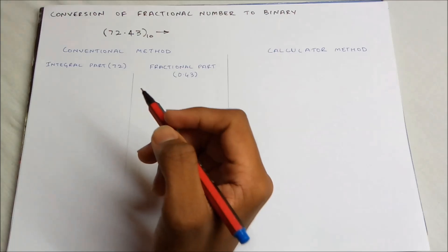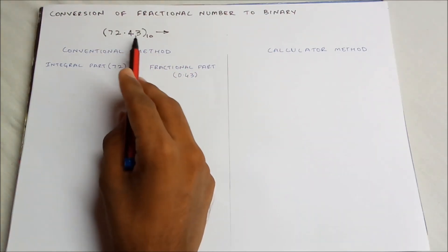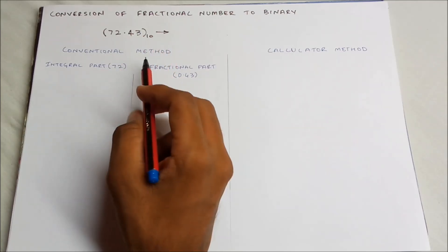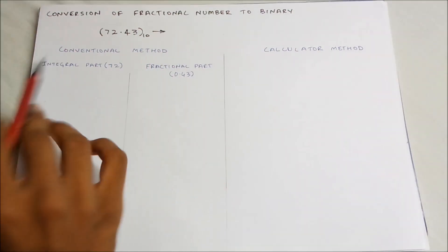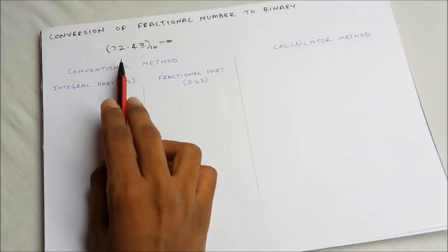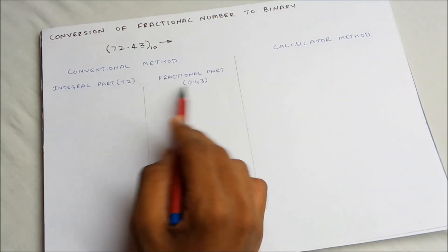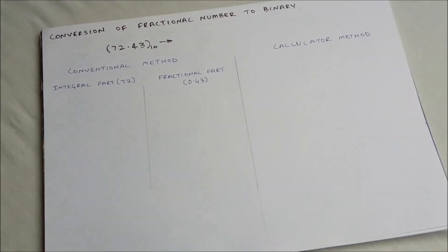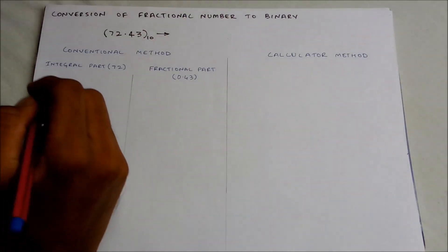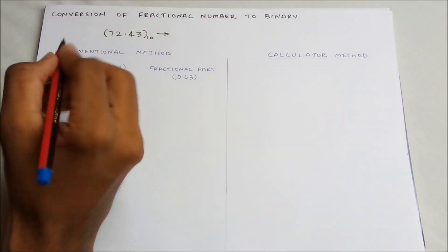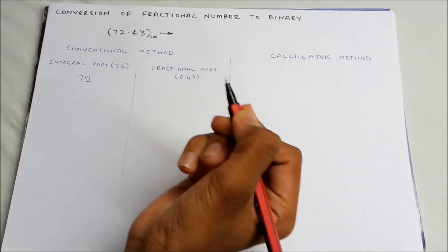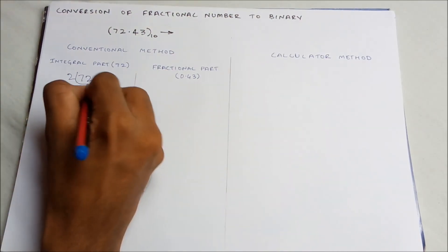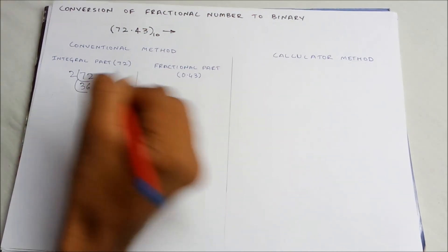So let's now convert the fractional number 72.43 in the decimal number system into binary. First we use the conventional method. We split the number into its integral part and fractional part and convert each to binary. For the integral part, we take 72 and repeatedly divide by 2. 72 divided by 2 gives 36, remainder 0.